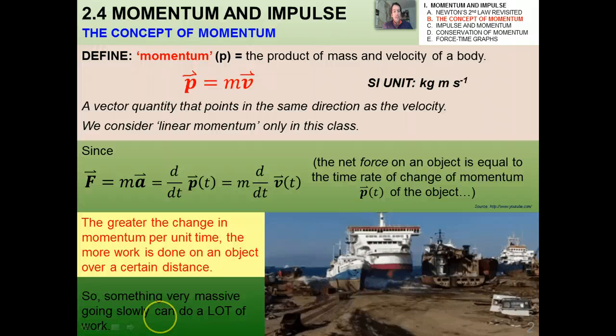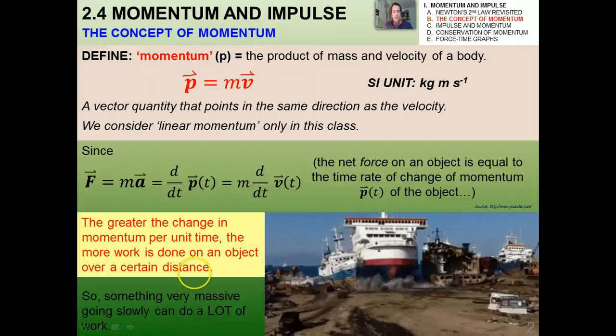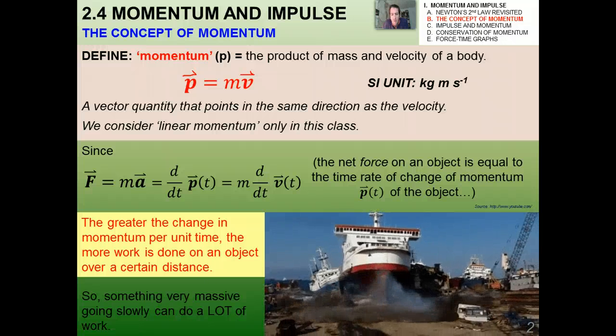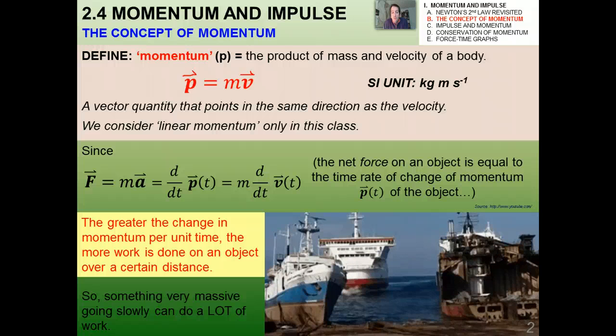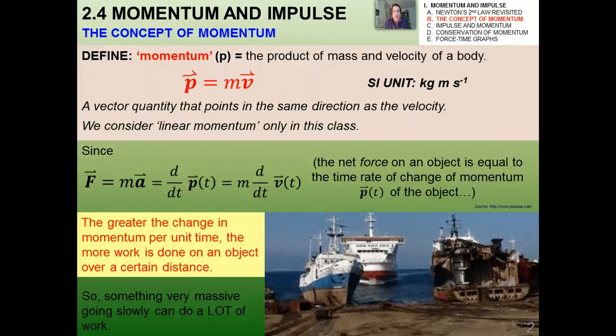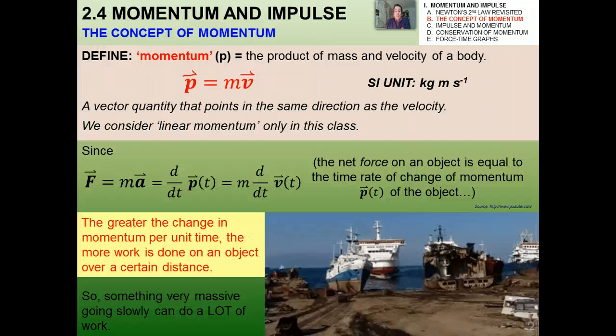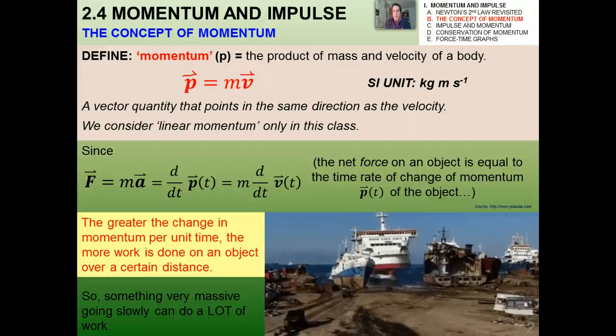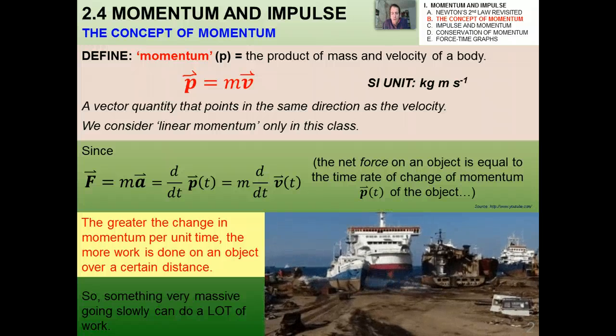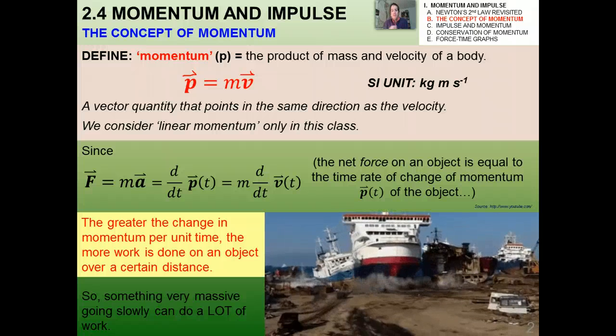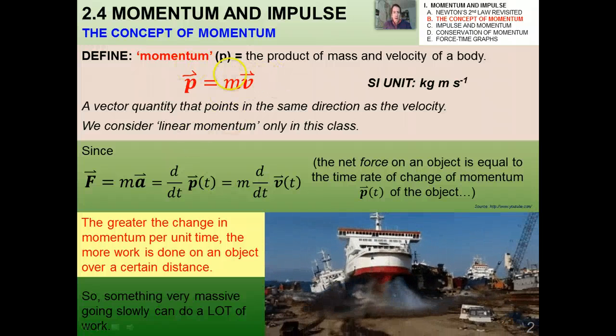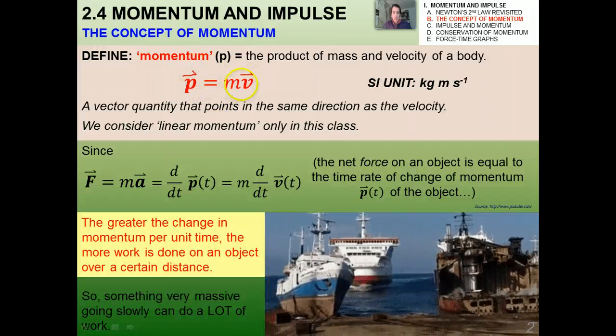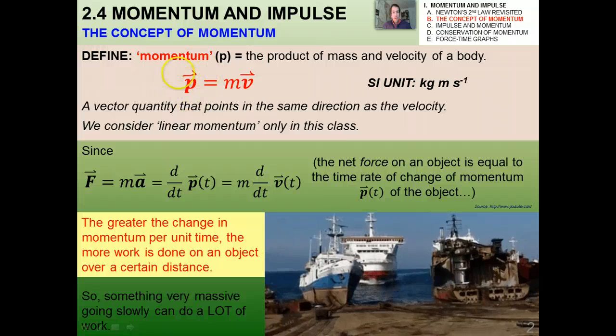Since F equals the time rate of change of momentum, the net force on an object is equal to the time rate of change of momentum. The greater the change in momentum per unit time, the more work is done on an object over a certain distance. In this case, we have a pretty massive object, which is a boat, going actually not very fast, all things considered, but you can see that the amount of work that it can do on this dock is enormous. Something very massive going slowly can do a lot of work or transfer a lot of energy. Conversely, something that's not very massive at all can do a lot of work if it's going very fast.